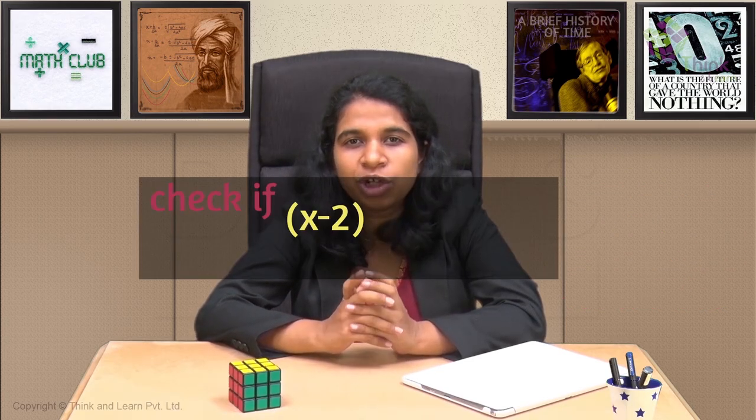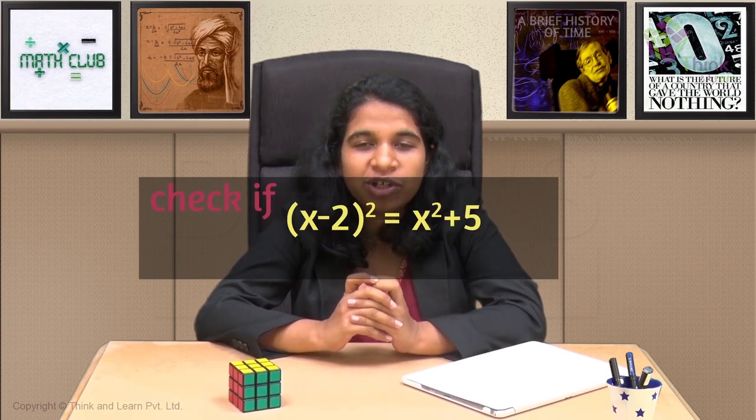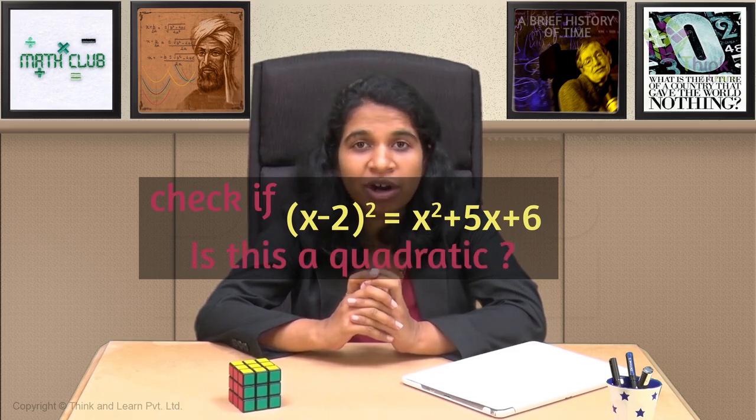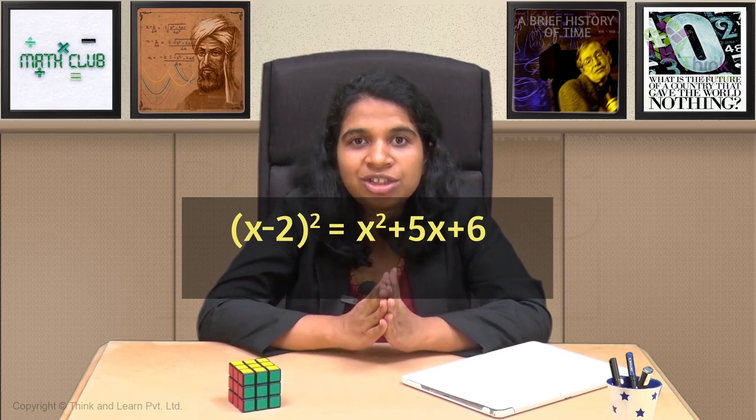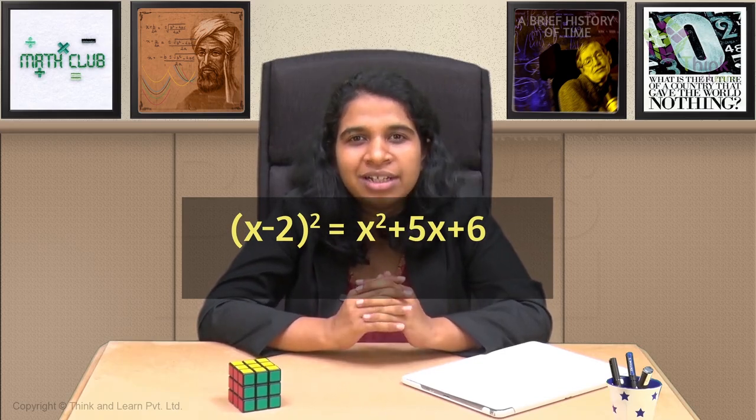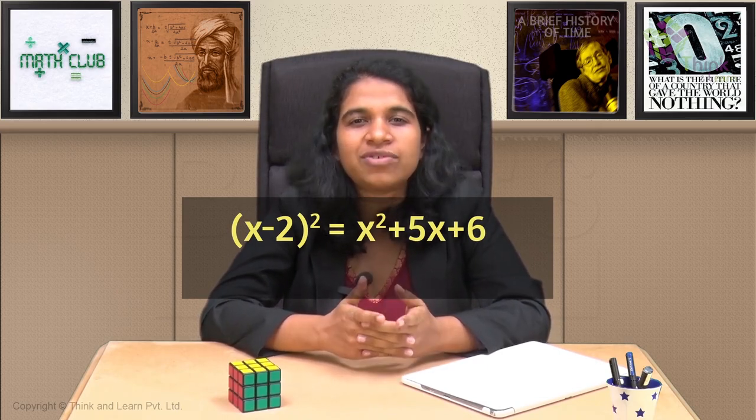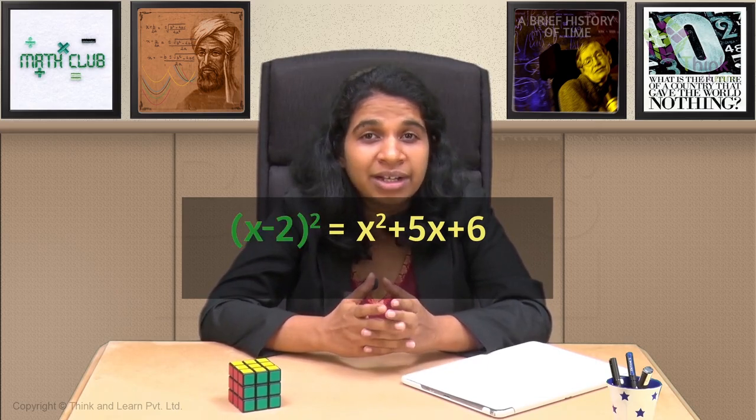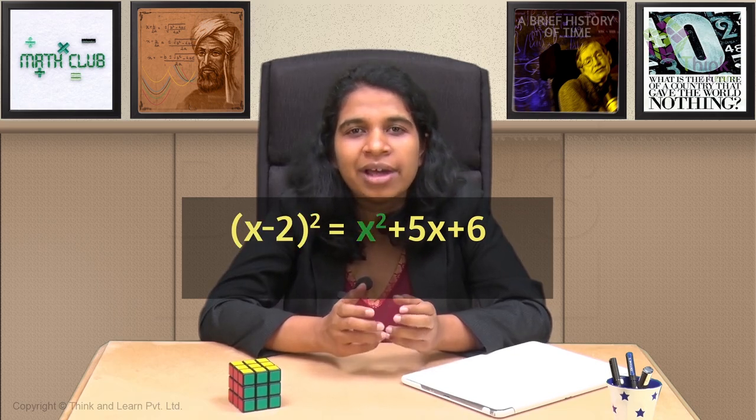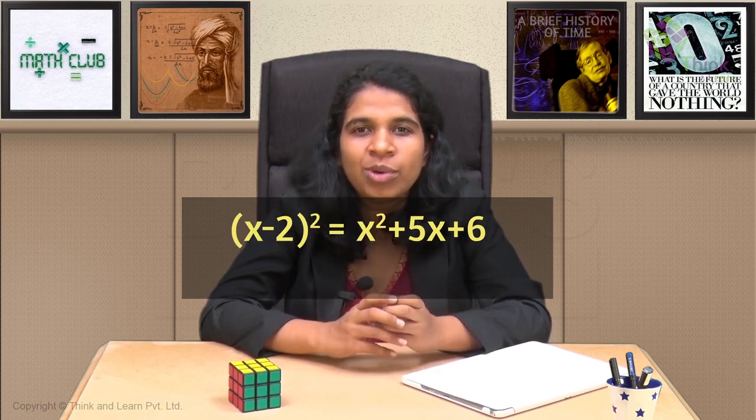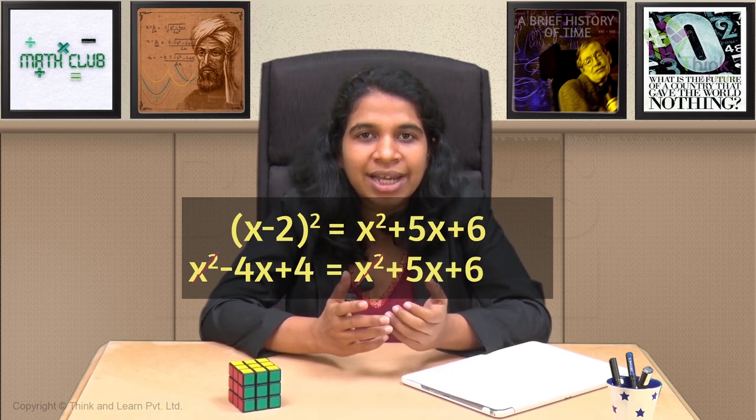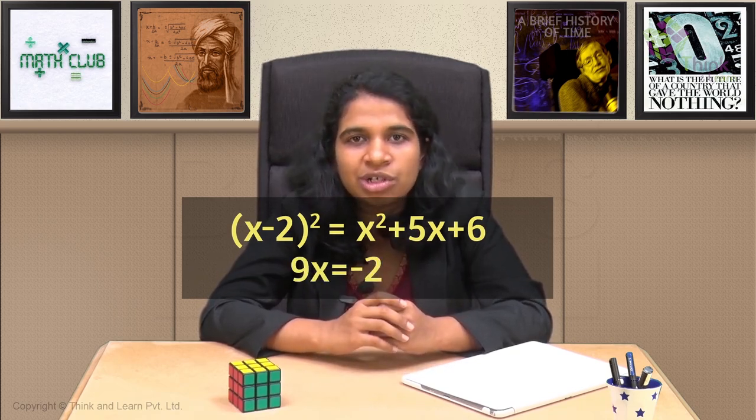Seems simple enough, right? So check this equation, x minus 2 the whole square equals x squared plus 5x plus 6. Tell me whether it's a quadratic or no. Perfect. So you understood that it's not actually a quadratic. The question was meant to confuse you. If you just looked at the question, you would have seen the degree to be 2, right? You had x minus 2 the whole squared. On the right-hand side, you had x squared. But the key is to simplify, right? When you simplified it, the x squares got cancelled and you were left with a linear equation, which is why you concluded it's not a quadratic.